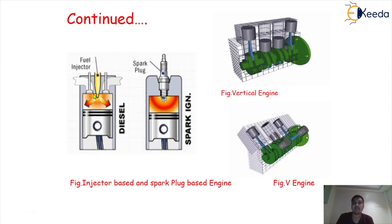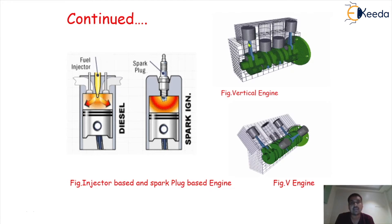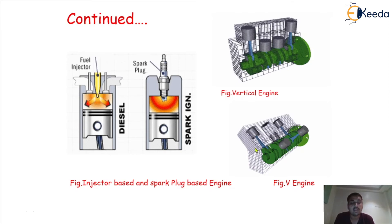Again, the piston, cylinder, and spark plug — along with injectors in some engines and spark plugs in others. Generally, injectors are used in diesel engines and spark plugs in the conventional petrol engine. This is called a vertical engine, where the reciprocating action of the piston is done in the vertical direction — that is why it is called a vertical engine. This is the V engine; the piston reciprocates in a V direction or the cylinders have a V shape. That is why it is called a V engine.